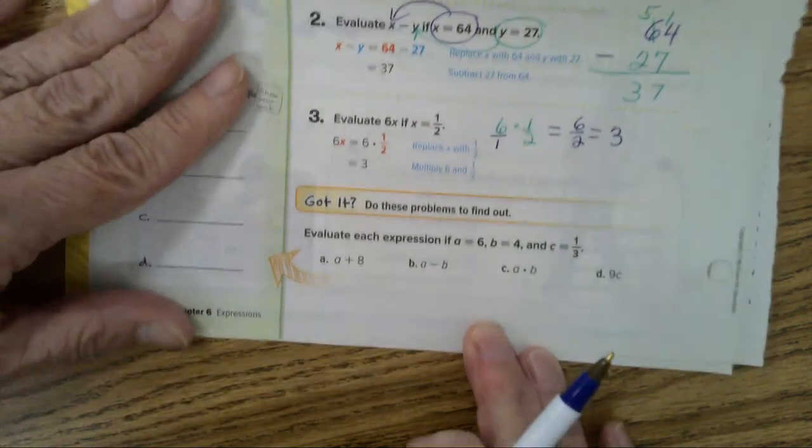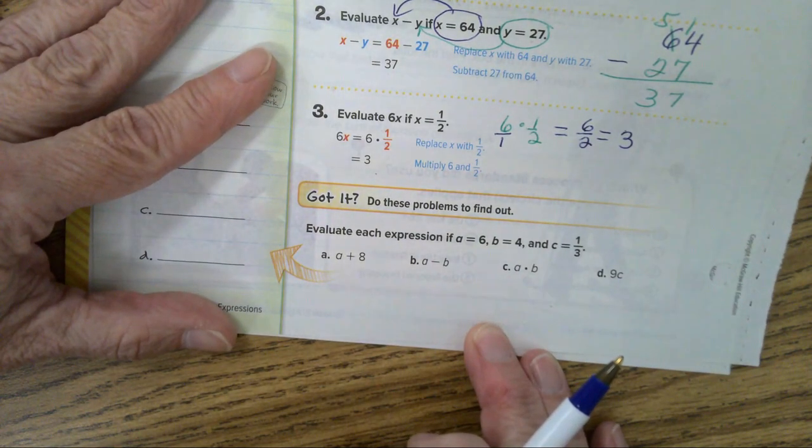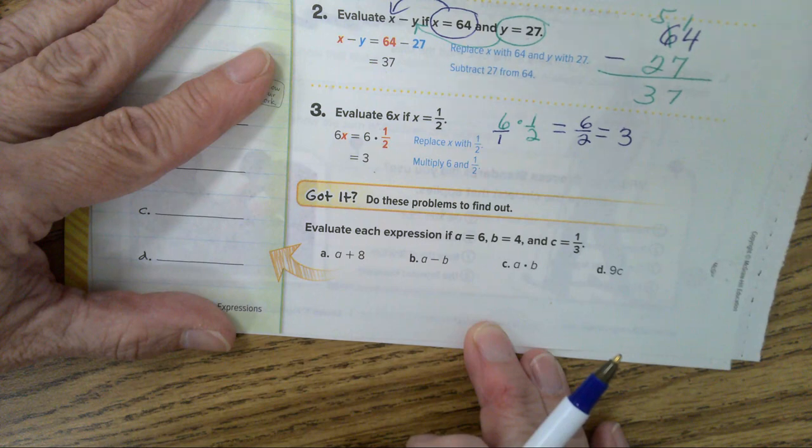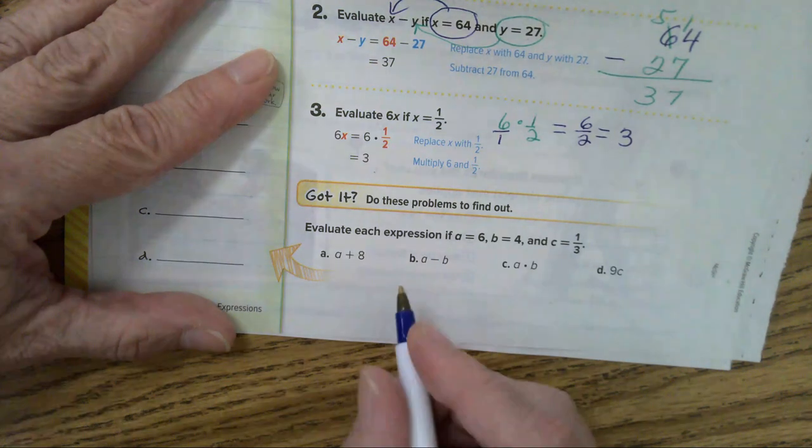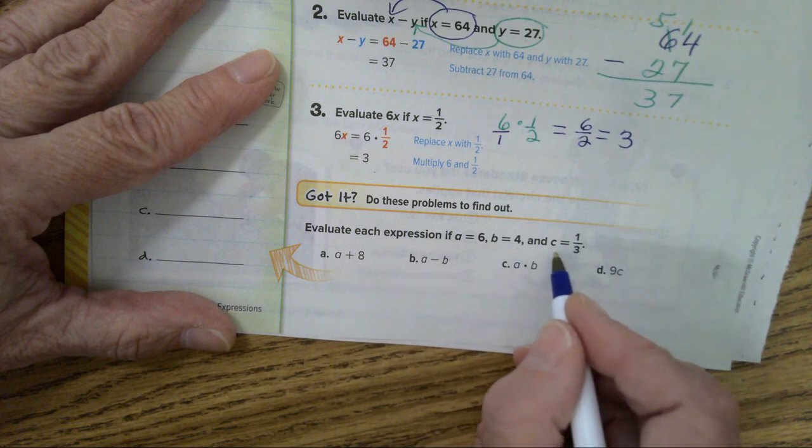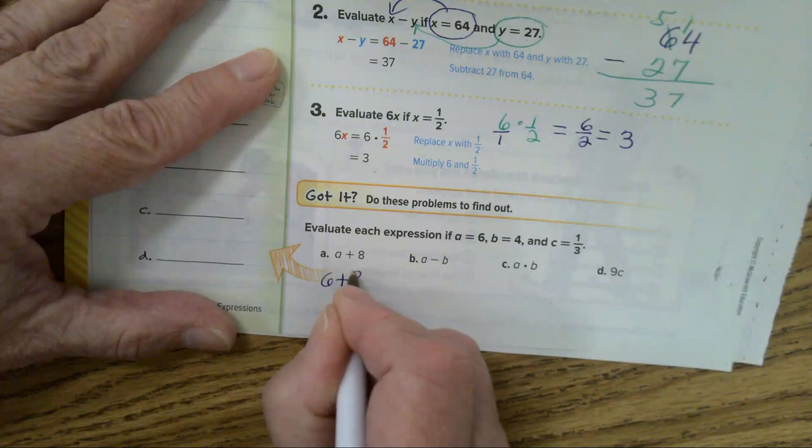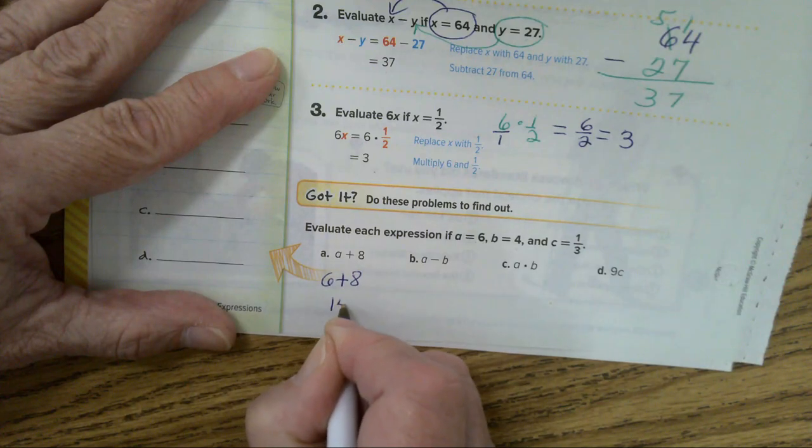Now, let's do A, B, C, and D. These are pretty easy. Replace A with 6, B with 4, and C with 1 third. Here, you will have 6 plus 8. And that equals 14.